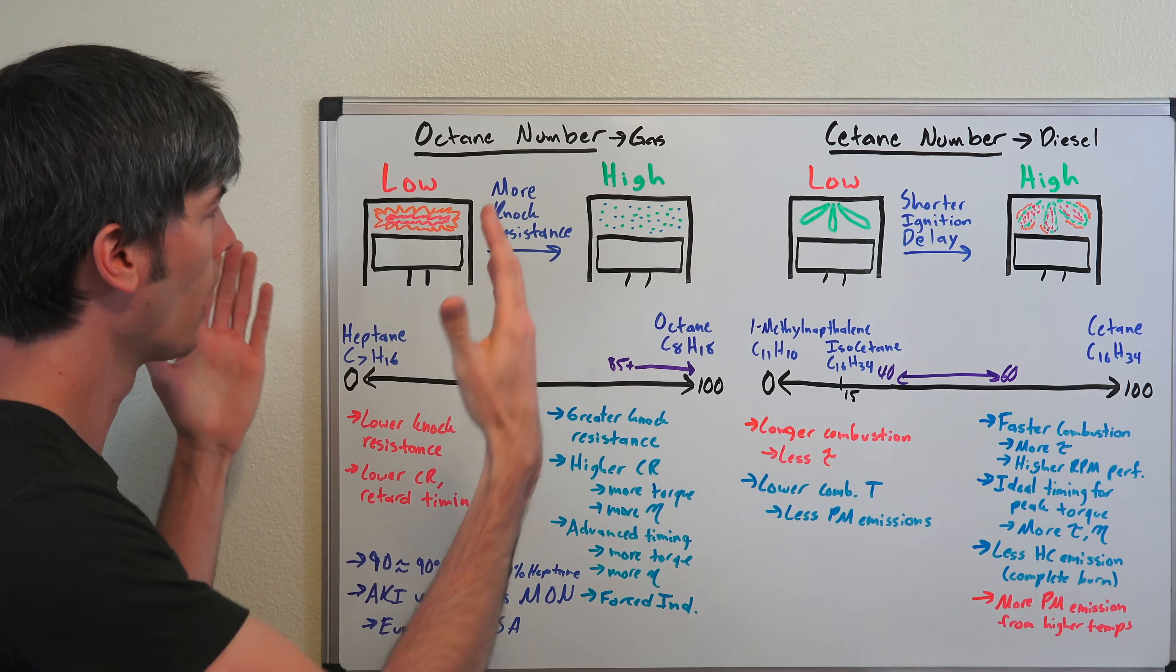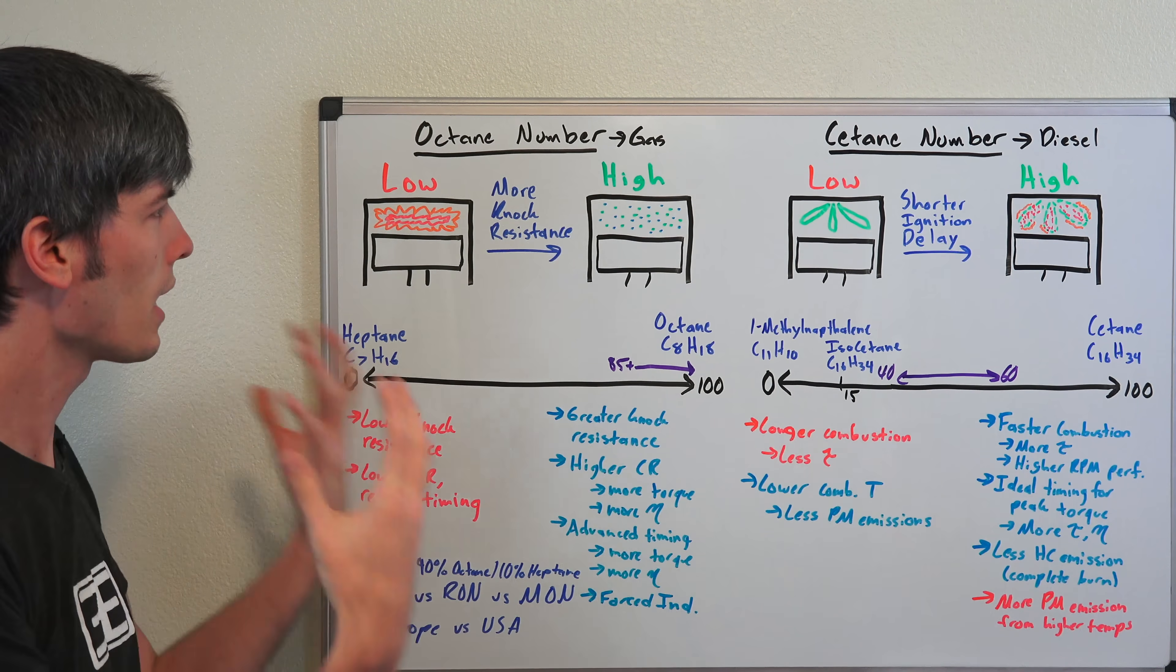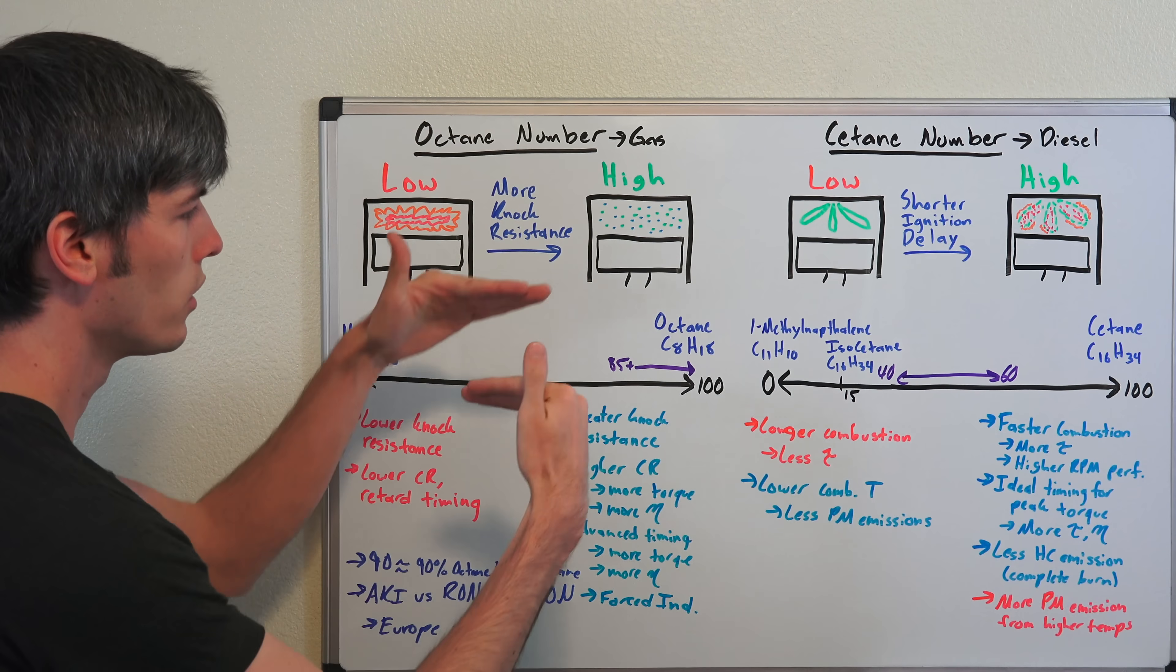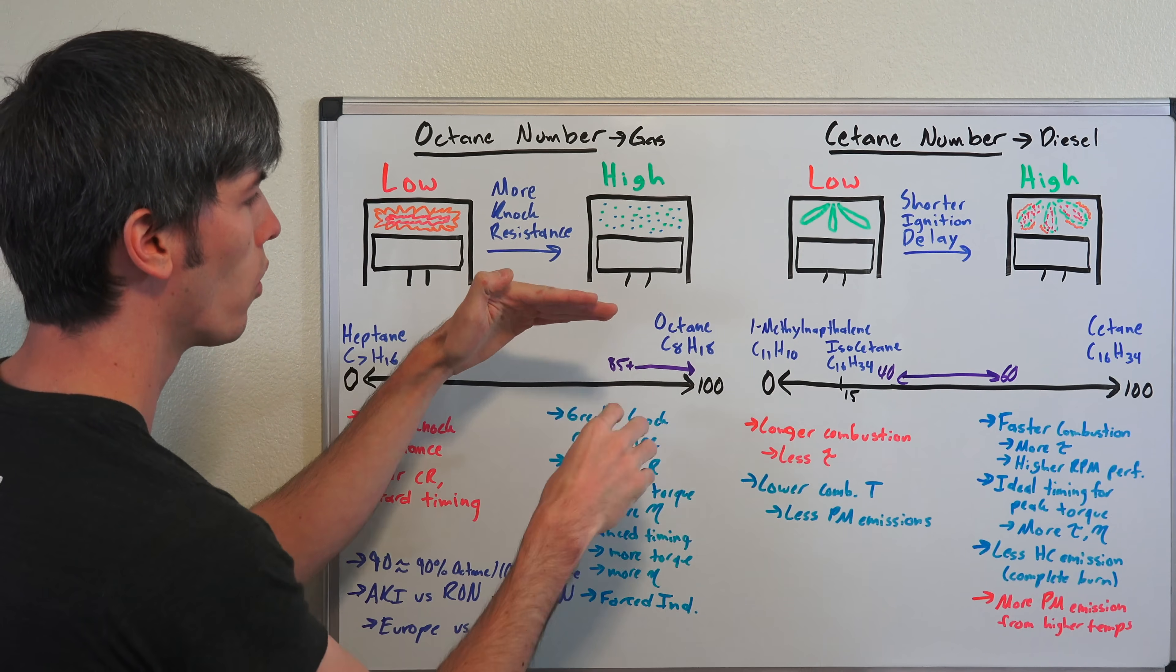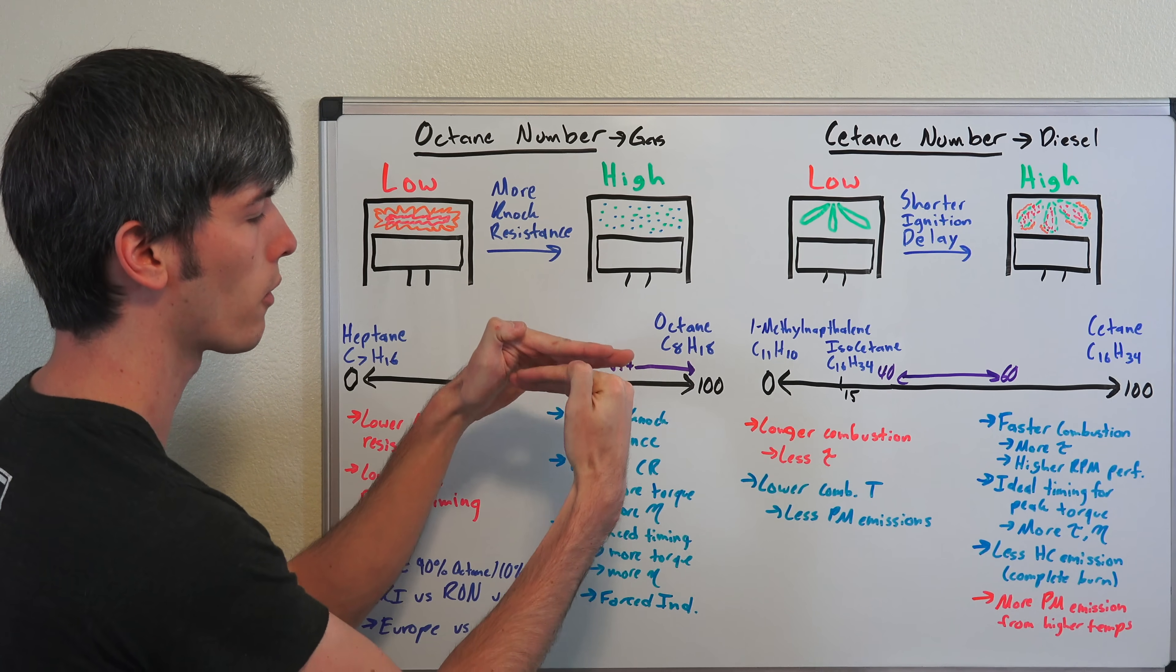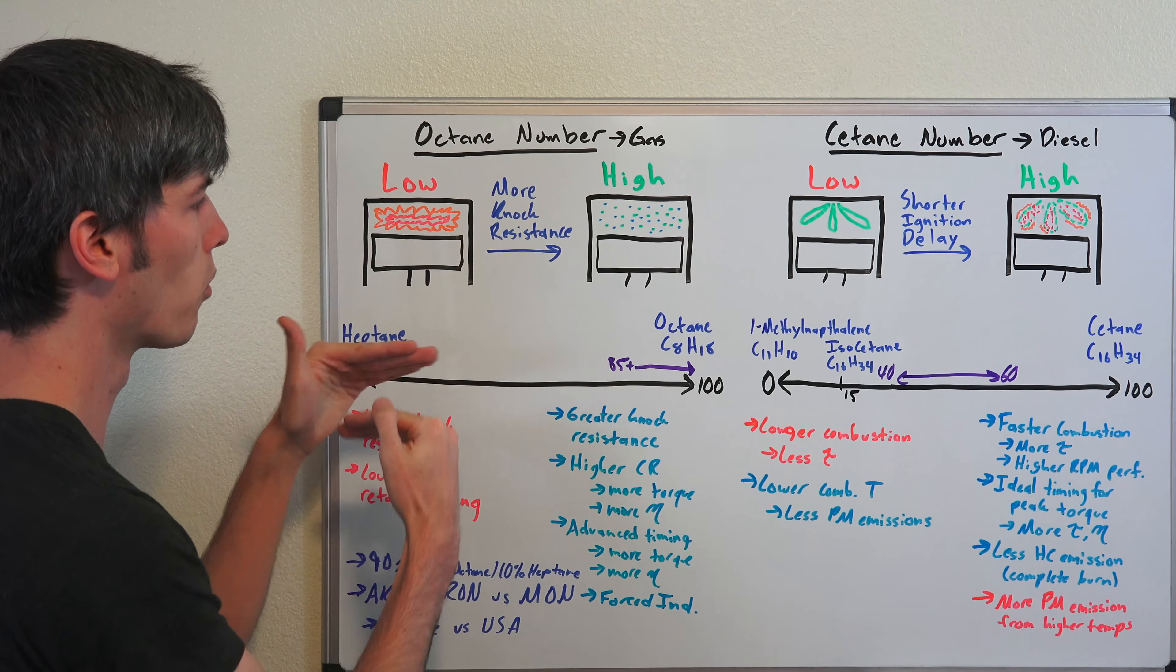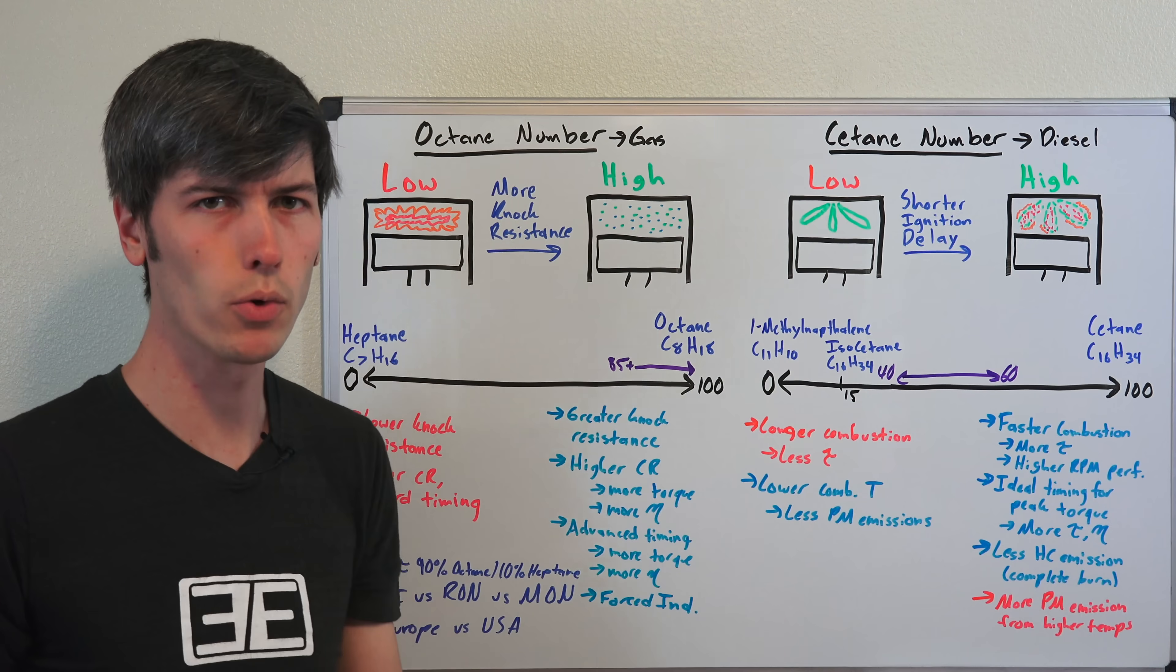So first, let's get into the basic definition. The octane number is the measurement of a fuel's ability to resist knock. A fuel with a high octane number can be compressed more without that fuel mixture igniting. The higher the number, the more you can compress it. The lower the number, the more likely that fuel is to ignite on its own from compression.